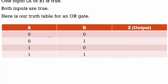Here's our truth table for an OR gate. A or B has to be true. When neither one of them is true, that results in zero. When A is not true but B is, A or B is true, so that results in a one. Same thing — when A is active and B is not, that results in a one. When they're both active, that also results in a one.